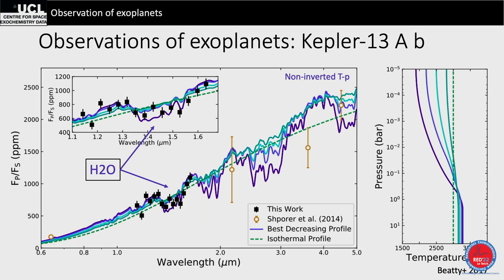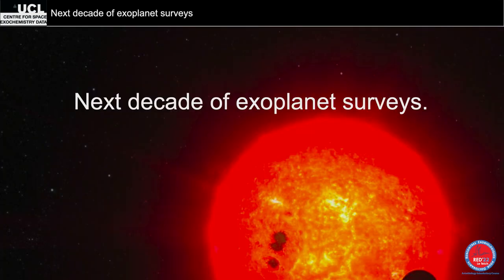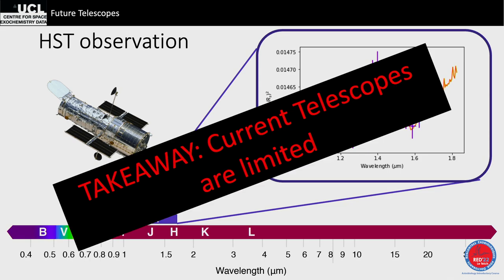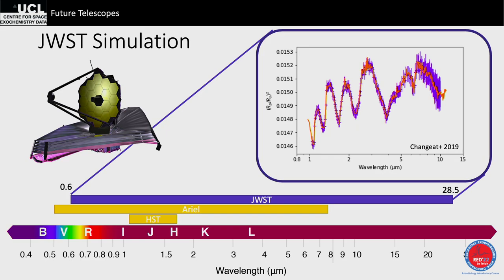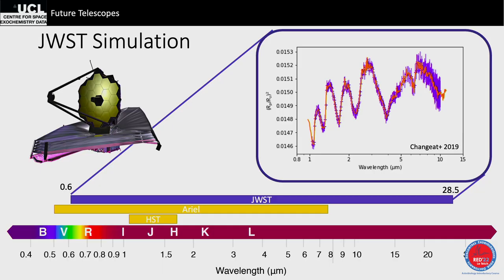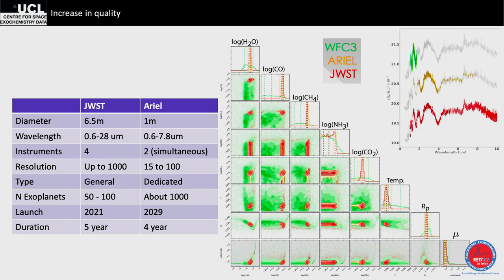Looking at the next decade: HST has very limited wavelength coverage. Ariel will have much larger coverage. James Webb has even broader coverage. The more wavelength coverage you have, the more atmospheric altitudes and molecules you probe. Signal-to-noise is important, but so is wavelength coverage — both Ariel and James Webb will be extraordinary for this.